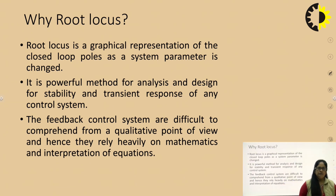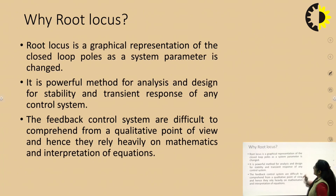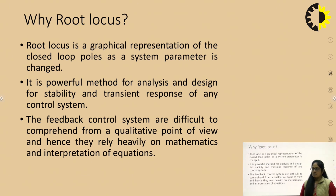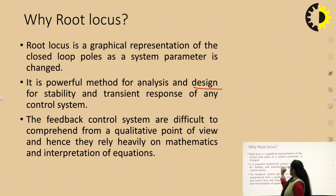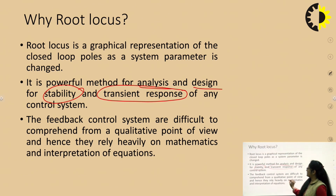Root Locus is a graphical representation of the closed loop poles as a system parameter is changing. It is a powerful method for analysis and design, both for the stability and transient response of a control system. This is because feedback control systems are difficult to comprehend from a qualitative point of view, and hence they rely heavily on mathematical interpretation of the equations.